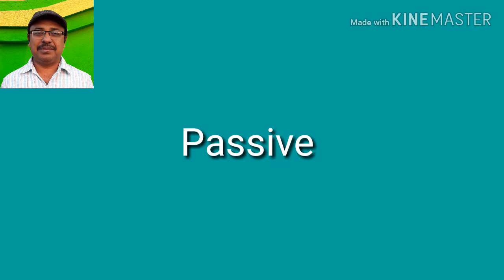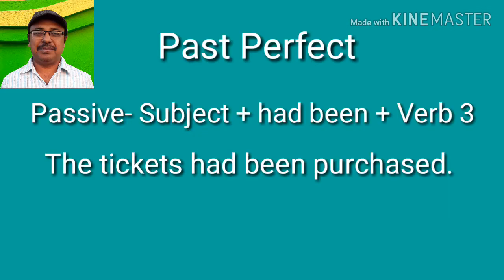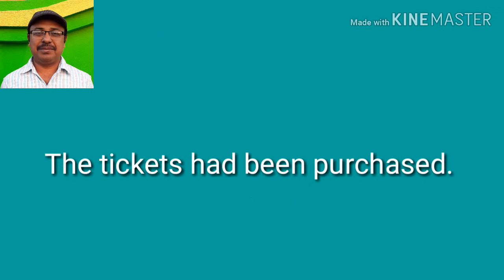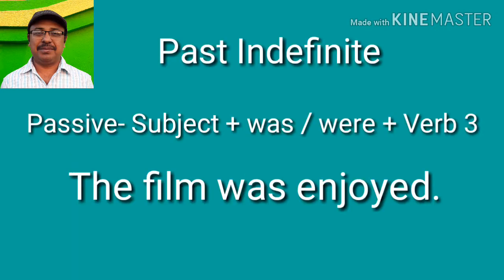But there are passive forms of simple past, past continuous, and past perfect. For example, 'The ticket had been purchased' — by my friend. That is the passive form of past perfect: subject plus 'had been' plus the past participle form of the verb. 'The film was enjoyed' — passive form using the past participle form of the verb.